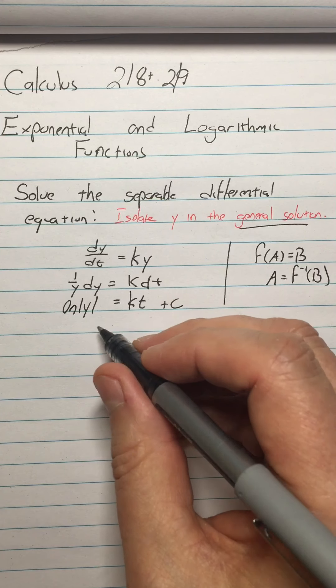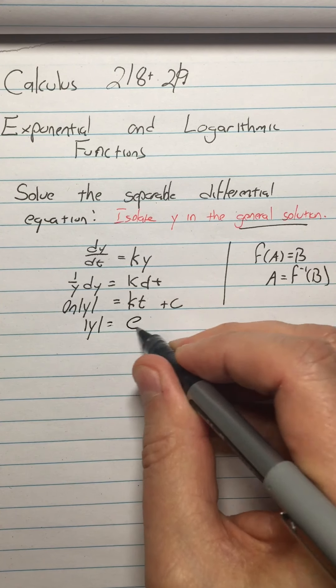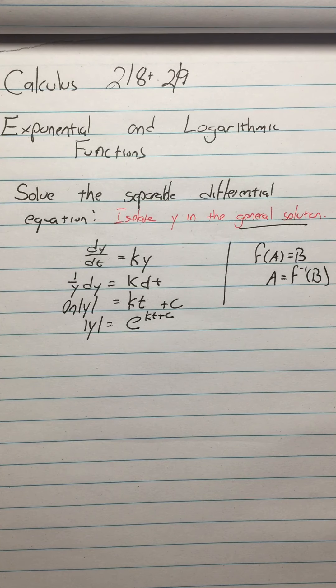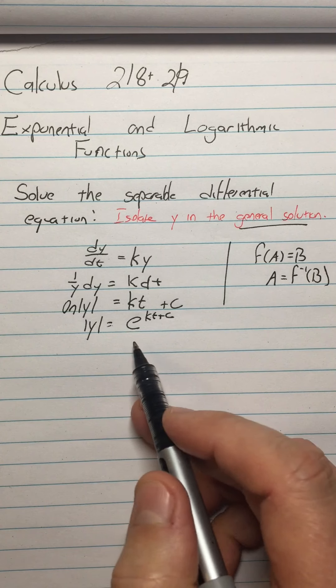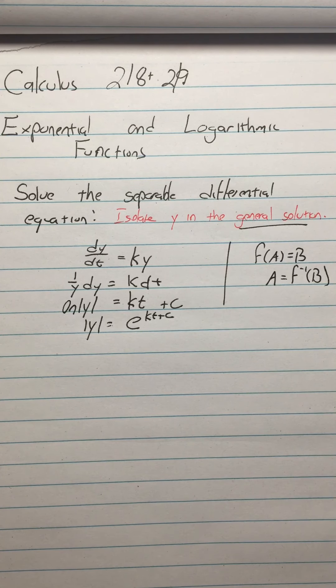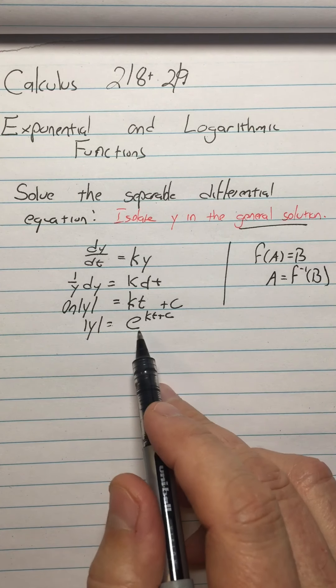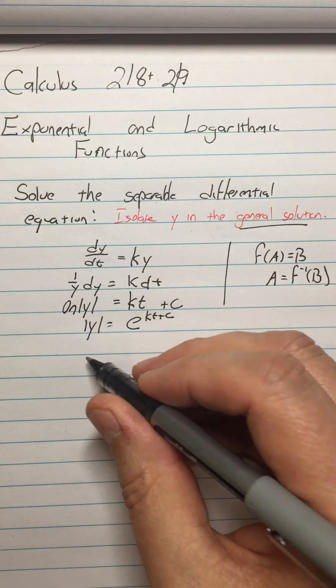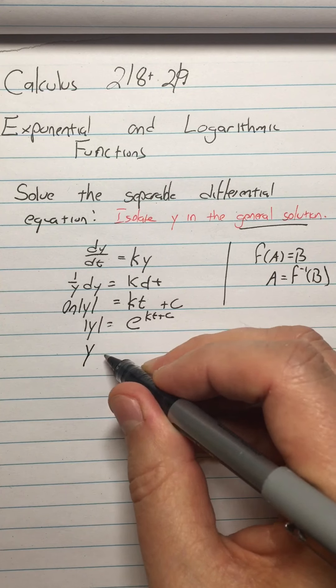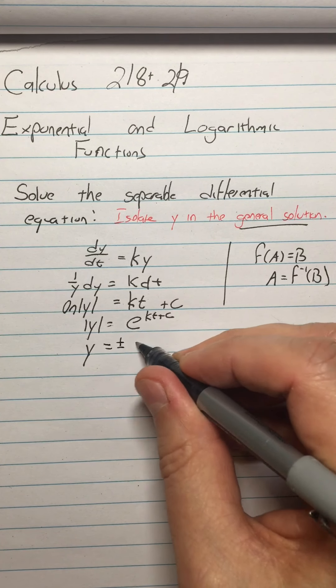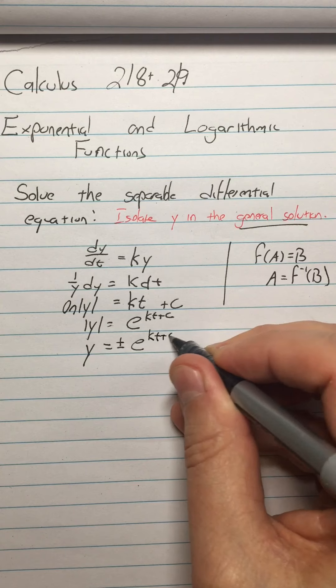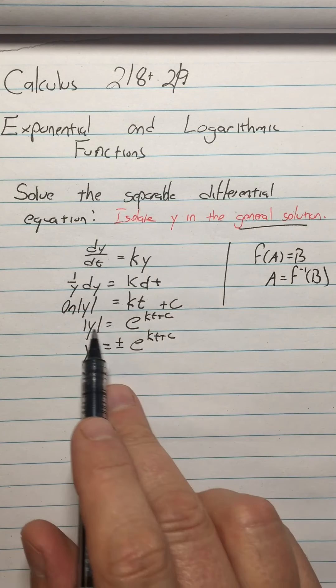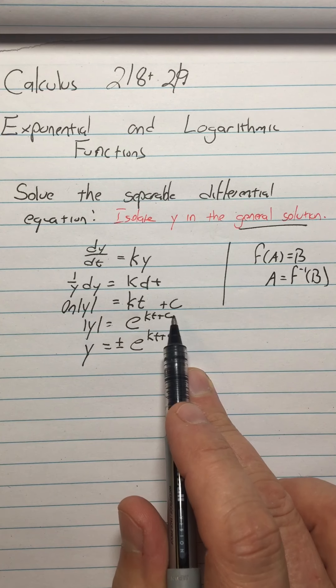And now, how do I solve with this absolute value? If I have absolute value of X equals 4, then X equals positive 4 or negative 4. So if I have absolute value of Y equals E to the KT plus C, then I'm going to say Y equals plus or minus E to the KT plus C. So if you have this, then you've done what I asked you to do at the opening, which is solve the separable differential equation and isolate the Y.